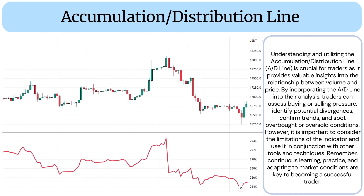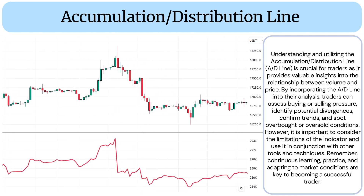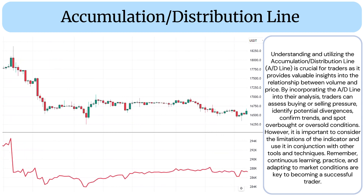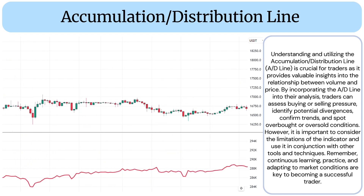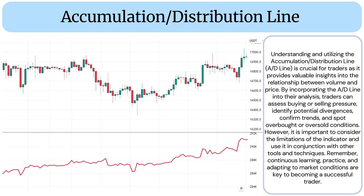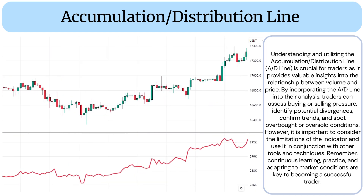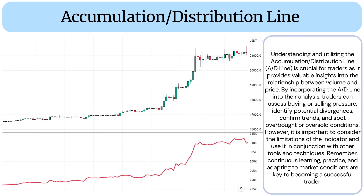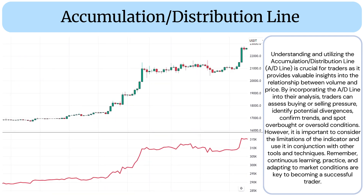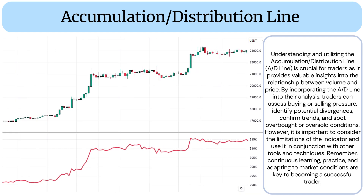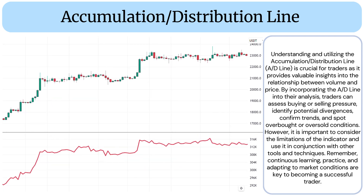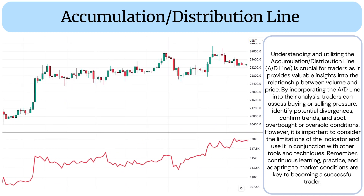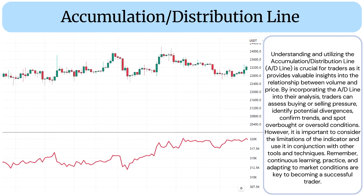Understanding and utilizing the Accumulation Distribution Line is crucial for traders as it provides valuable insights into the relationship between volume and price. By incorporating the AD line into their analysis, traders can assess buying or selling pressure, identify potential divergences, confirm trends, and spot overbought or oversold conditions. However, it is important to consider the limitations of the indicator and use it in conjunction with other tools and techniques.